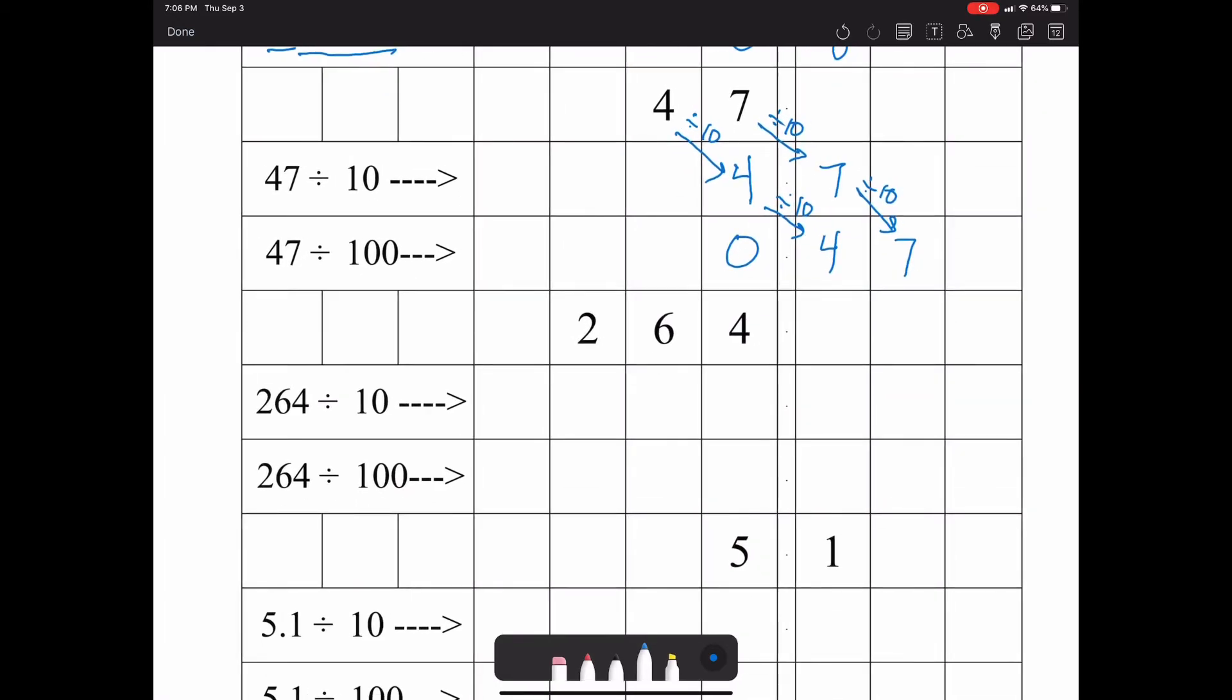It works the same with three-digit numbers and however many digits you have. If you divide 264 by 10, each digit is going to be divided by 10 and shift over one space. So your 2 is going to go here, 6 is going to go here, 4 is going to go here.